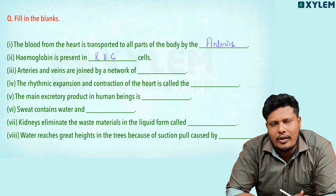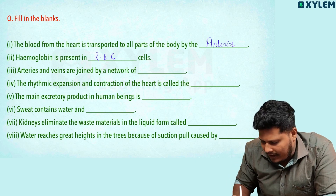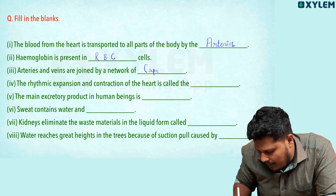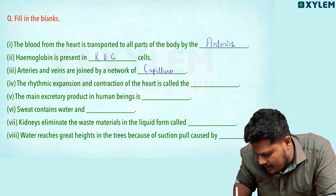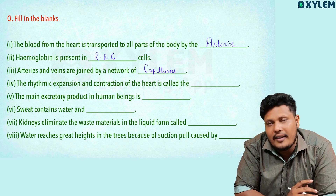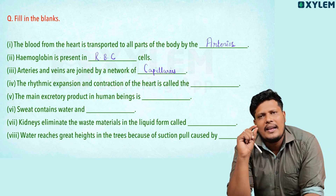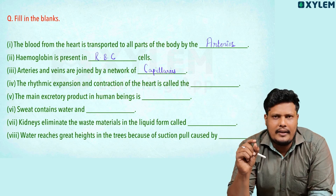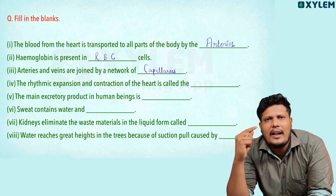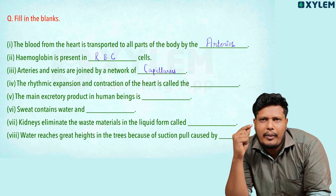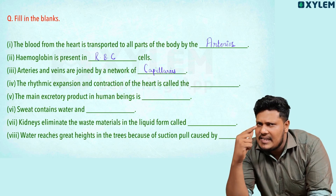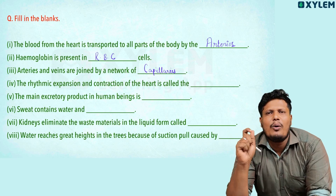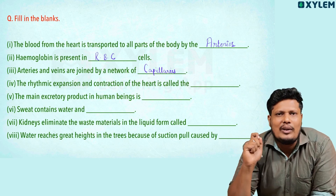Arteries and veins are joined by a network of capillaries. Capillaries are made of a single layer of cells.